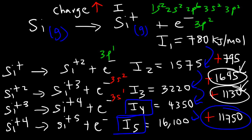Going from the fourth to the fifth ionization energy, the jump is huge. The reason is you're not going from 3p to 3s — you're going from 3s to 2p. The fifth electron represents the 2p⁶ electron, and 2p is closer to the nucleus than 3s. Those first four electrons are valence electrons in the third energy level; it's much harder to remove a core electron in the second energy level than a valence electron in the third.